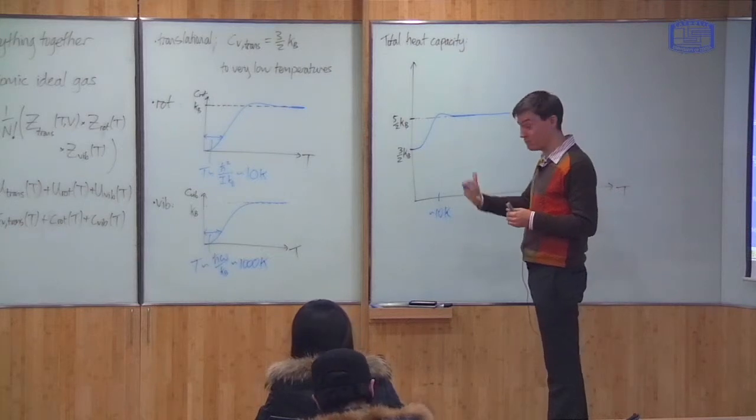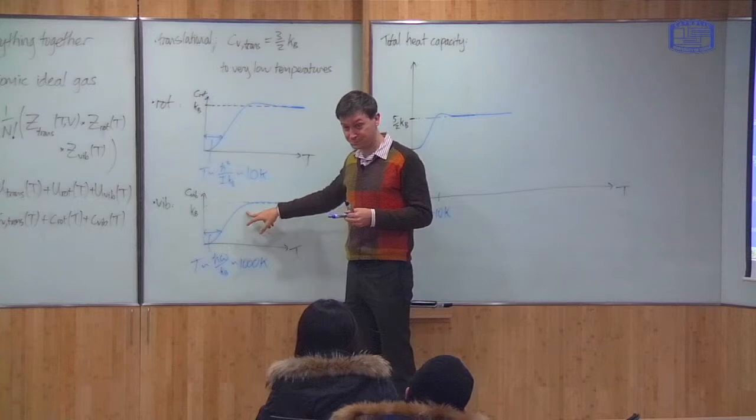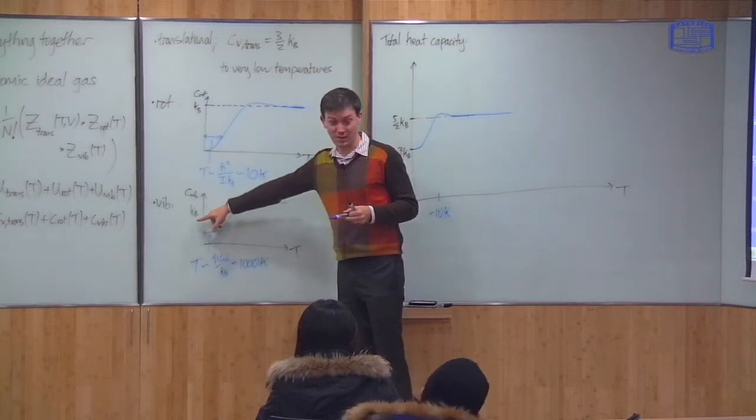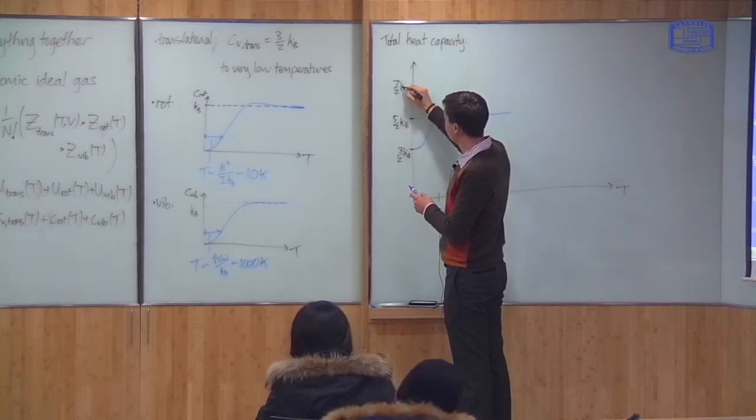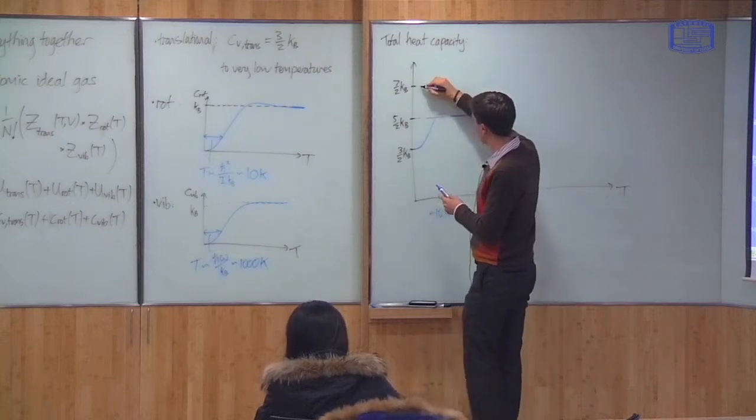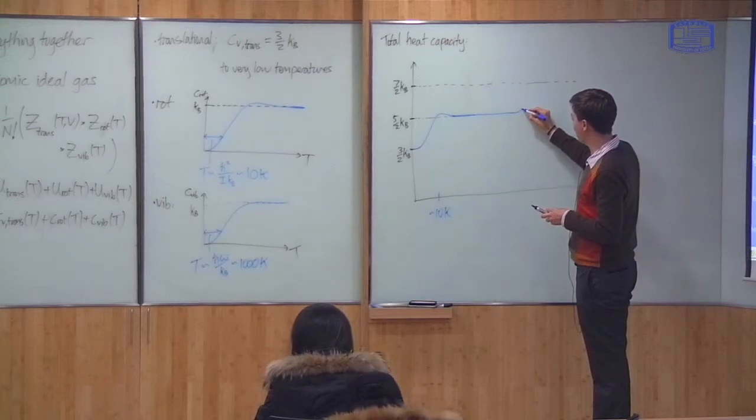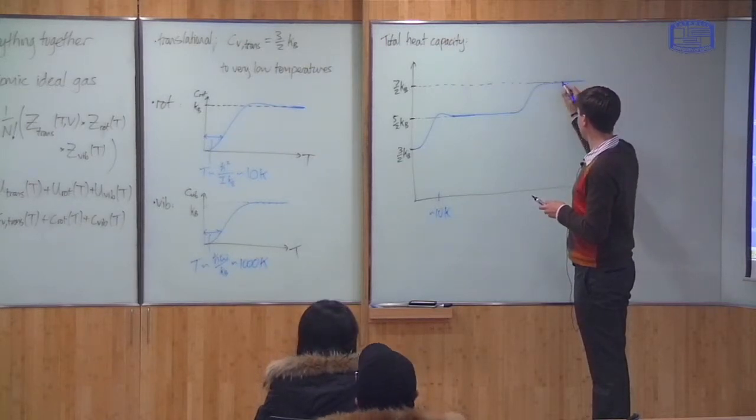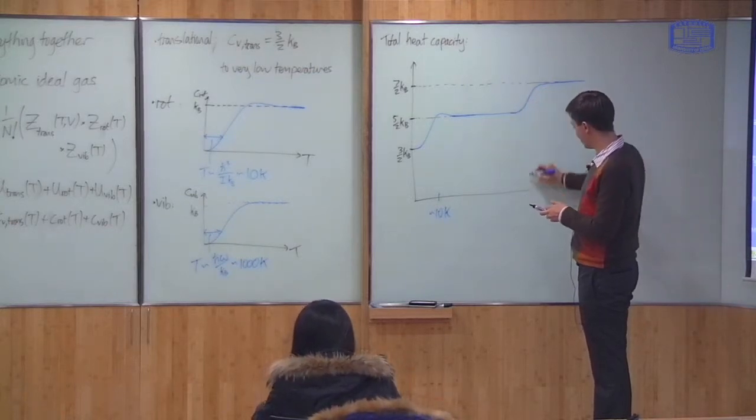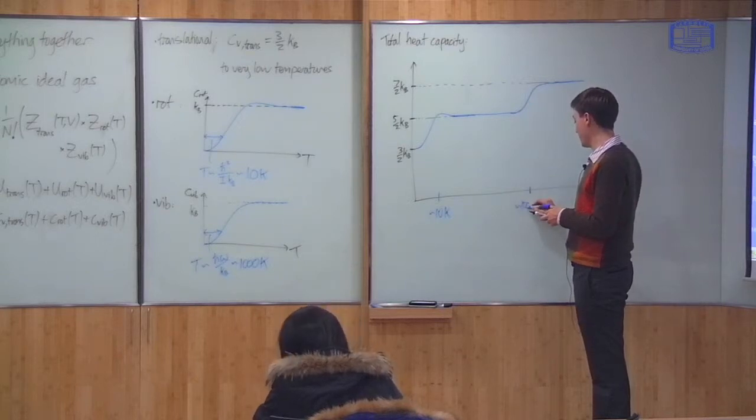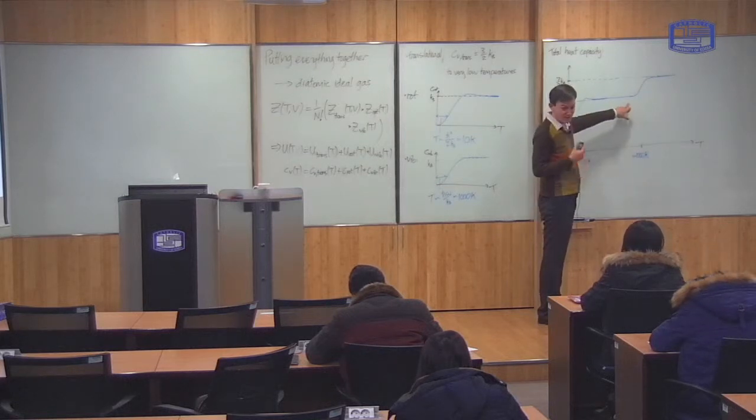Then I have to go to much higher temperatures. At much higher temperatures, I start to excite the vibrational part. The vibrational part adds one more KB, getting me from 5 halves KB up to 7 halves KB. At very high temperatures, the heat capacity will increase again to this value. The characteristic temperature at which this happens is thousands of Kelvin. We get a graph which looks like this, adding them all together.